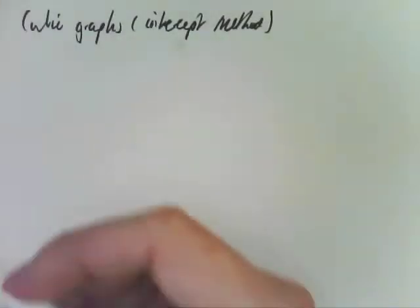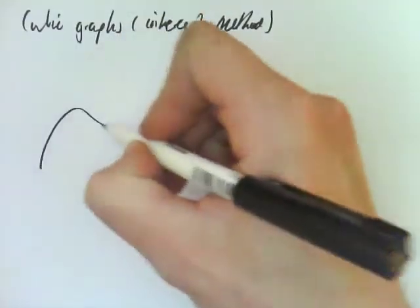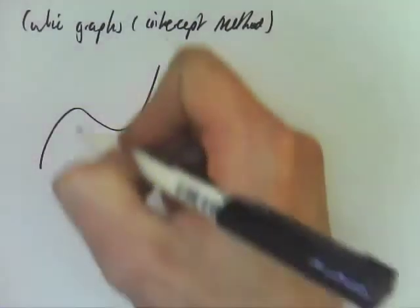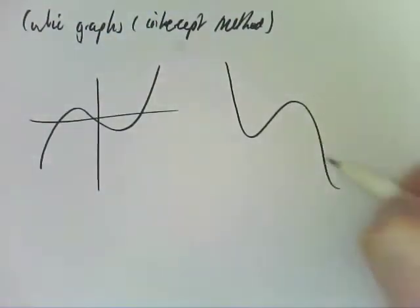All right, cubic graphs look generally like this if they're positive. If they're negative, they look like that.